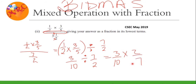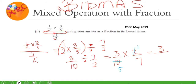Now we look if there's anything that can be cancelled. Diagonally, three and seven — no. What about two and ten? We can cancel there: two into two is one, and two into ten is five. So our answer is three — because three times one is three — over five times seven, which is 35. So our answer is three over 35.